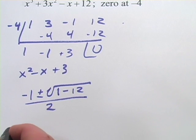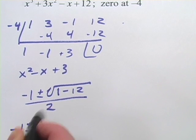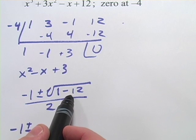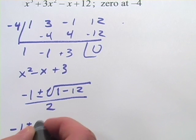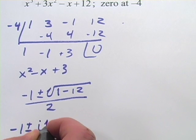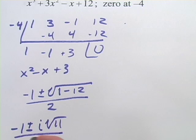So we've got negative 1 plus or minus, and this is the square root of negative 11, but we're going to factor out the square root of negative 1 and make it i. So this is plus or minus i times the square root of 11 over 2.